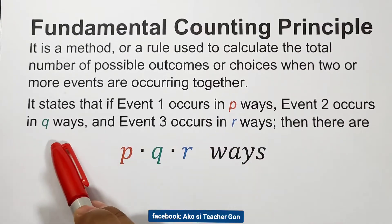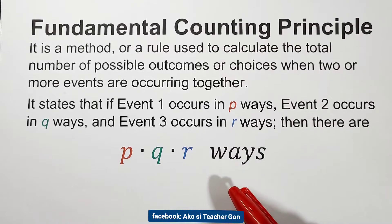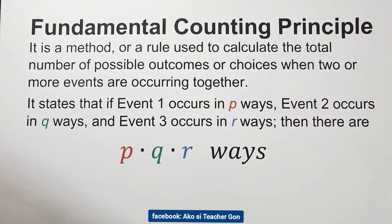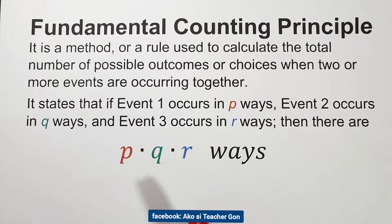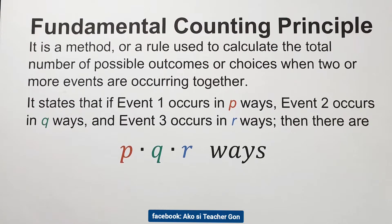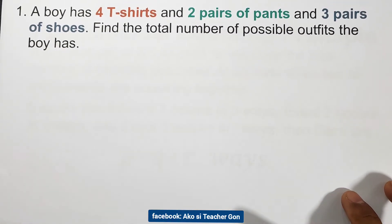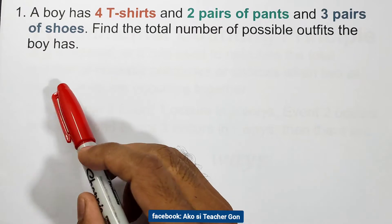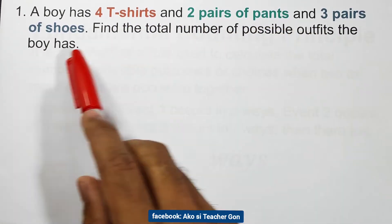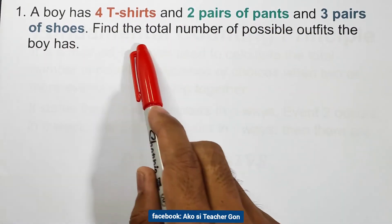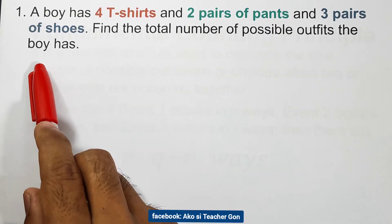So P, Q, and R are the number of choices or ways. For example number one: a boy has four t-shirts, two pairs of pants, and three pairs of shoes. Find the total number of possible outfits that boy has.